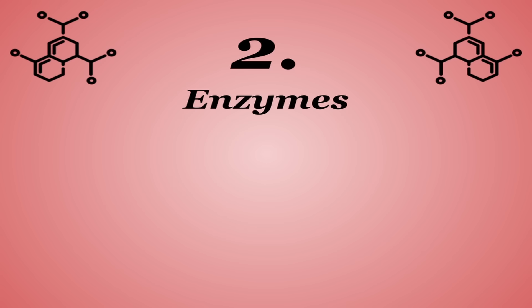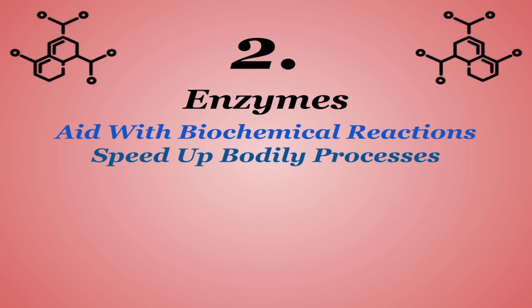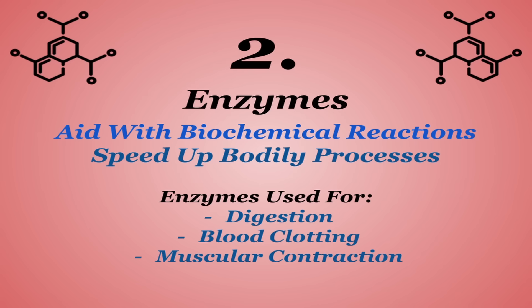Function number two of protein is the role they play as enzymes. Enzymes are a type of protein that aids with biochemical reactions that take place in the body. The structure of enzymes allows them to combine with molecules called substrates to catalyze or speed up bodily processes. There's many different types of enzymes used for digestion, blood clotting, muscular contraction, energy production, the list goes on.